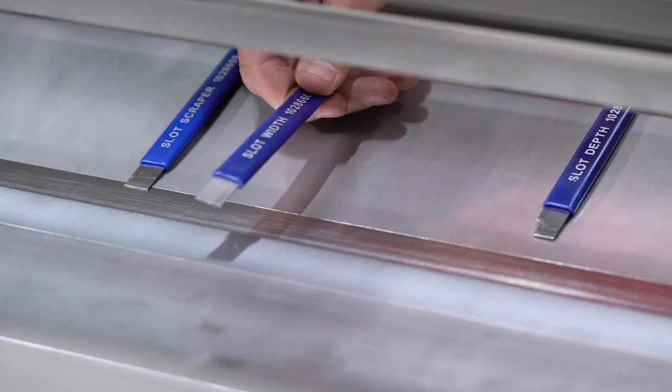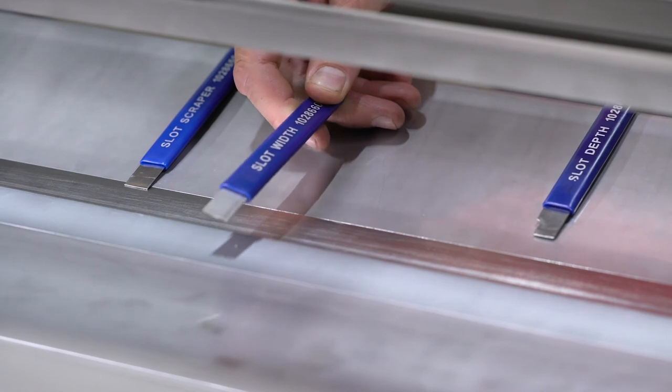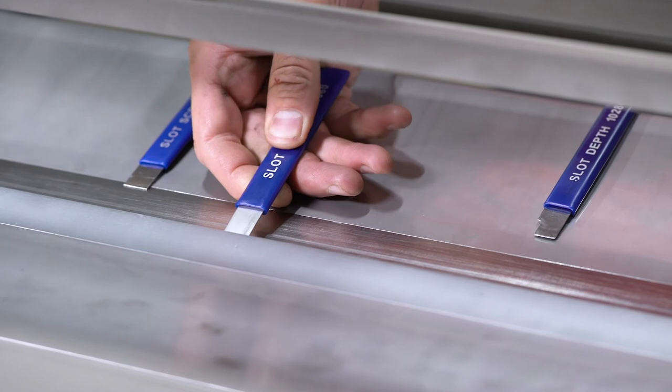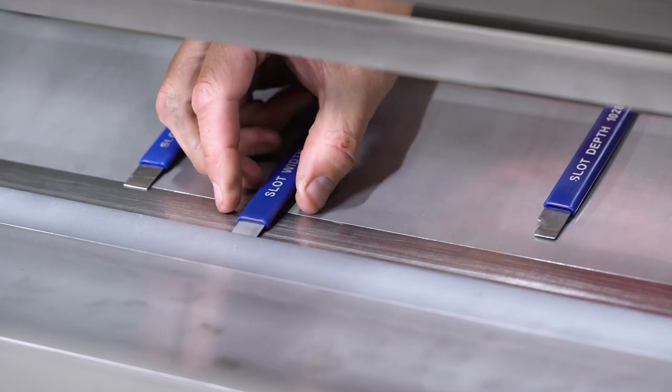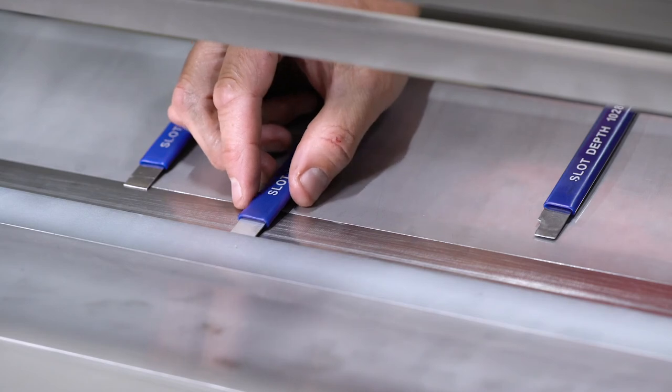The slot width tool itself is used to measure the vertical distance on the slot. This tool when you try to put it in the slot of the blade guide should not go. If it goes in and you can leave it and it stays by itself, the blade guide is too wide and therefore unserviceable.